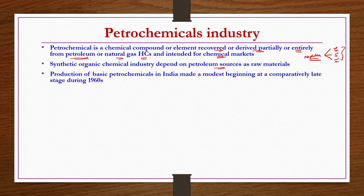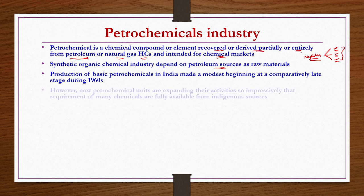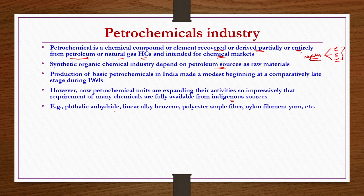Production of basic petrochemicals in India made a modest beginning at a comparatively late stage during the 1960s. However, now petrochemical units have expanded so impressively that requirements for many chemicals are fully met from indigenous sources. Examples include phthalic anhydride, linear alkyl benzene, polyester fibers, and nylon filaments — most of the synthetic chemical industry in India is now indigenous.